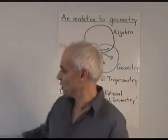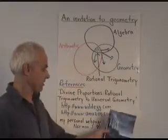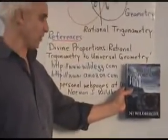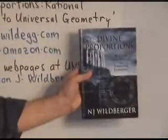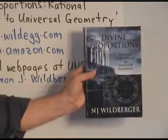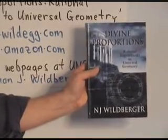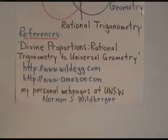The main source reference is my recent book called Divine Proportions: Rational Trigonometry to Universal Geometry, which gives a thorough and systematic account and development of this new way of thinking about geometry and trigonometry. It's available online at the publisher's website or at amazon.com.